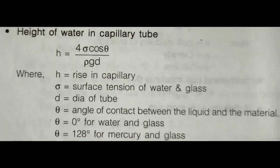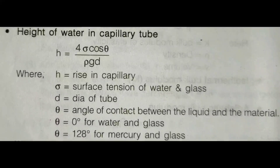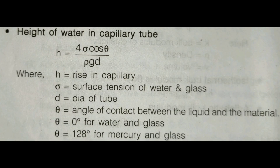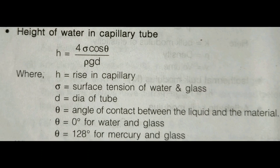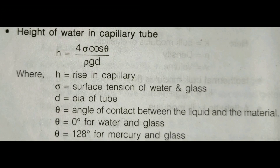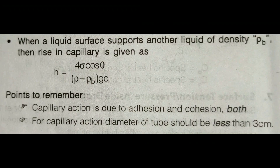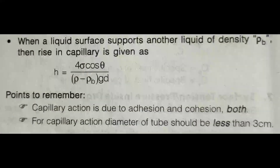The height of water in a capillary tube is calculated as h equals 4 sigma cos theta divided by rho times g times d. Here, h is the rise in capillary, sigma is the surface tension between water and glass, d is the diameter of the tube, and theta is the angle of contact between liquid and the material. Theta is 0 degrees for water and glass, and 128 degrees for mercury and glass.